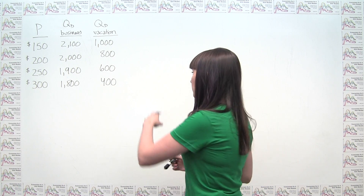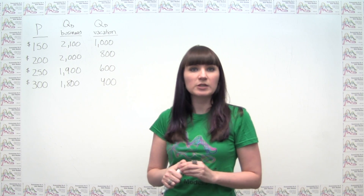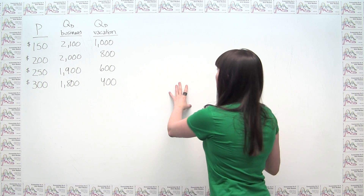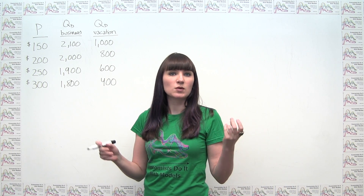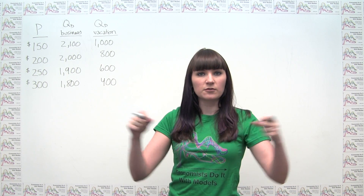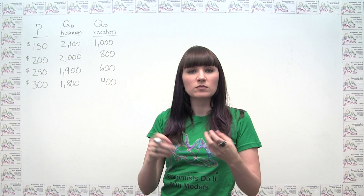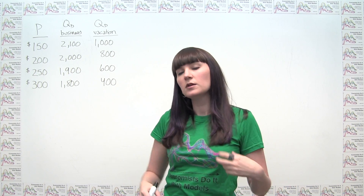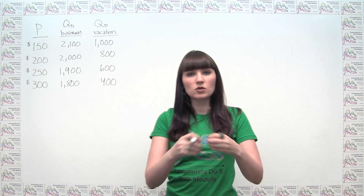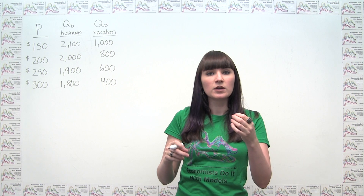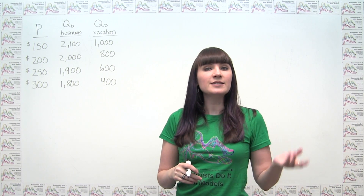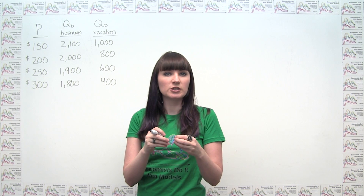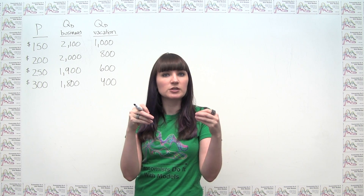The first thing we want to do is think about our elasticity formula. In general, the price elasticity of demand measures how responsive quantity demanded is to price. You can think about elasticity very literally — like a rubber band. A rubber band that's very elastic: you put a force on it and it stretches a lot. A rubber band that's not very elastic: you put that same force and it stretches just a little bit. Similarly, demand that's very elastic means a particular percentage change in price produces a large percentage change in quantity demanded. If your demand is very inelastic, that same percentage change in price produces only a small percent change in quantity demanded.